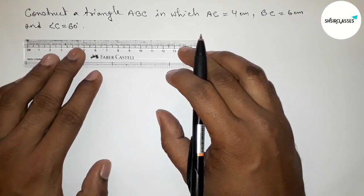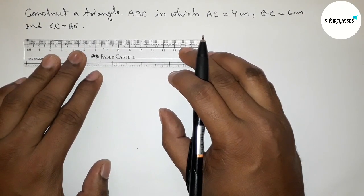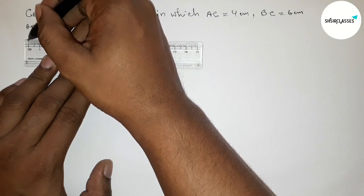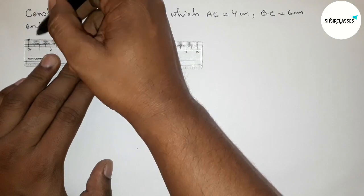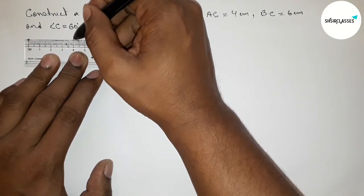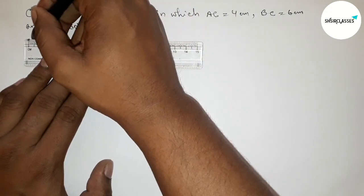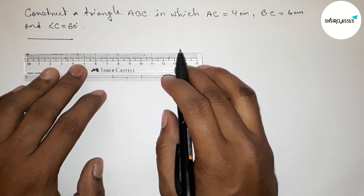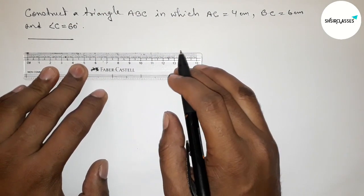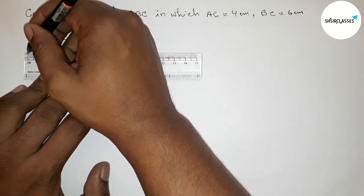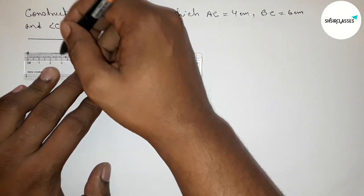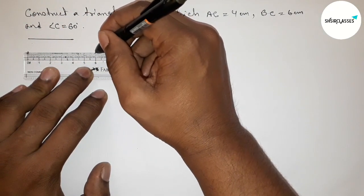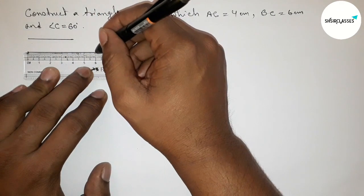First of all, let us draw the two given sides. Drawing 4 centimeter — starting from zero, this is 4 centimeter. And drawing another line, 6 centimeter — starting from zero, this is 6 centimeter.